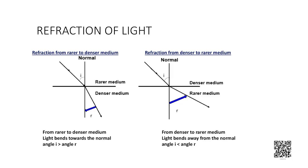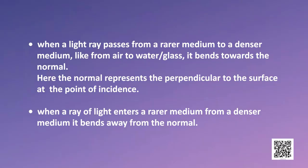For a given pair of media, the medium in which the speed of light is less is referred to as an optically denser medium, while the medium in which the speed of light is more is referred to as an optically rarer medium. From our observations, we may conclude that when a light ray passes from a rarer medium to a denser medium, like from air to water or glass, it bends towards the normal. The normal represents the perpendicular to the surface at the point of incidence. When a ray of light enters a rarer medium from a denser medium, it bends away from the normal.